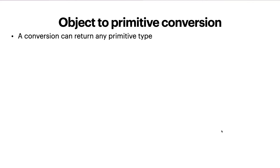An important thing to know about all primitive conversion methods: they do not necessarily return the hinted primitive. There is no control over whether toString returns exactly a string or whether Symbol.toPrimitive returns a number for the hint 'number'. The only mandatory thing is that these methods must return a primitive, not an object. For historical reasons, if toString or valueOf returns an object there is no error — the value is just ignored as if the method didn't exist. In contrast, Symbol.toPrimitive is stricter: it must return a primitive, otherwise there will be an error.